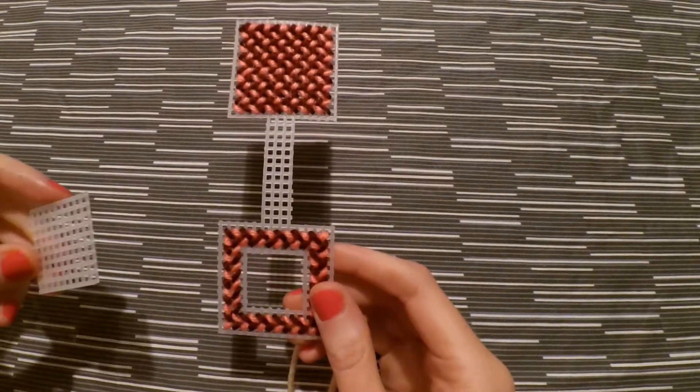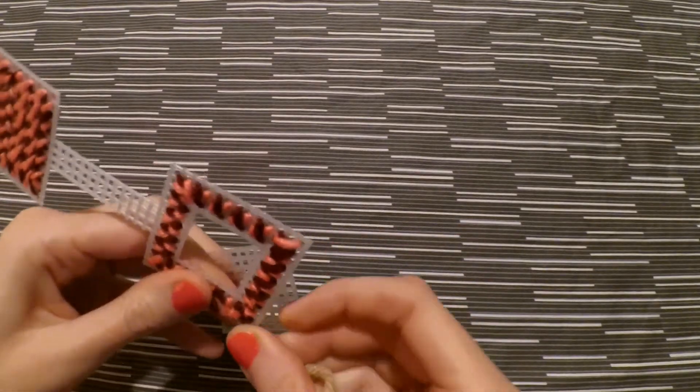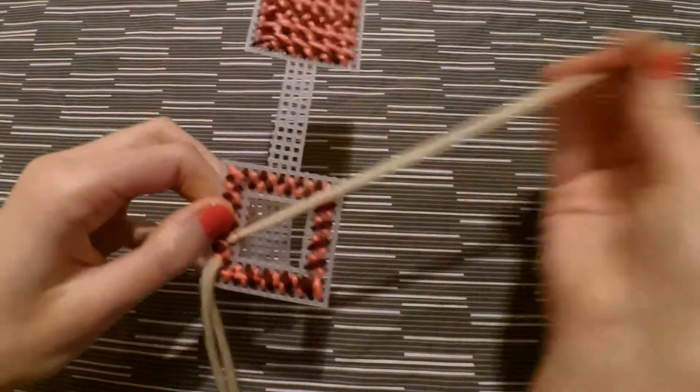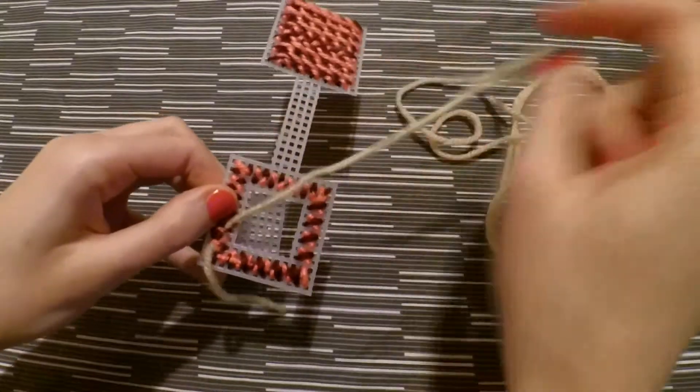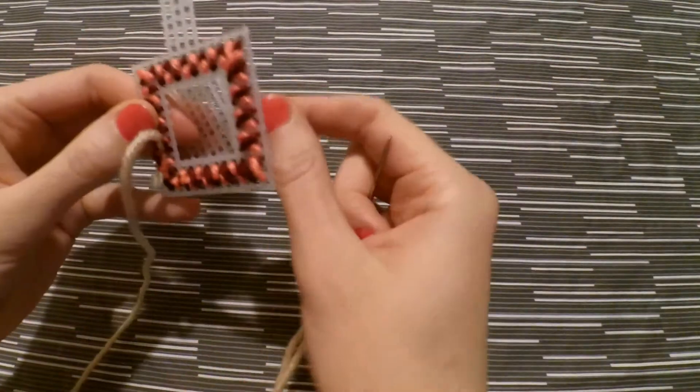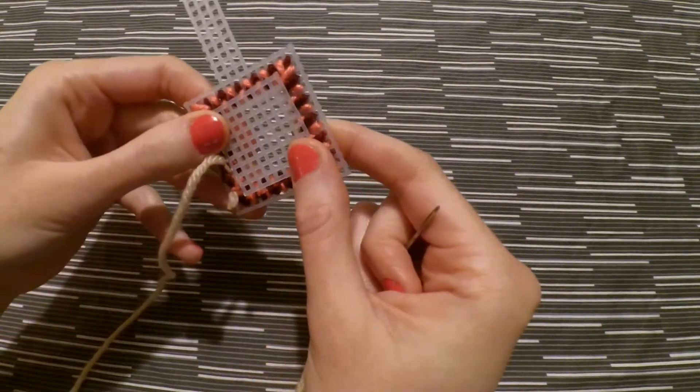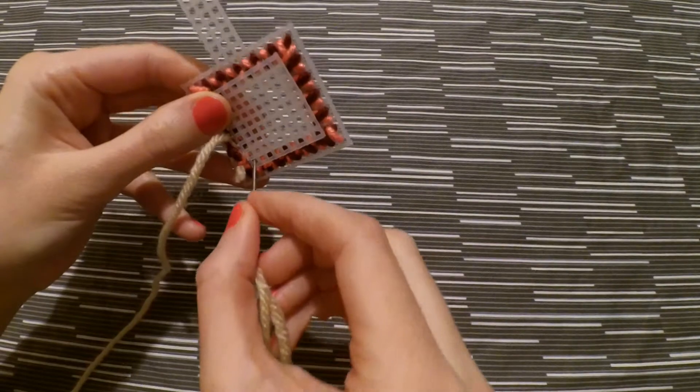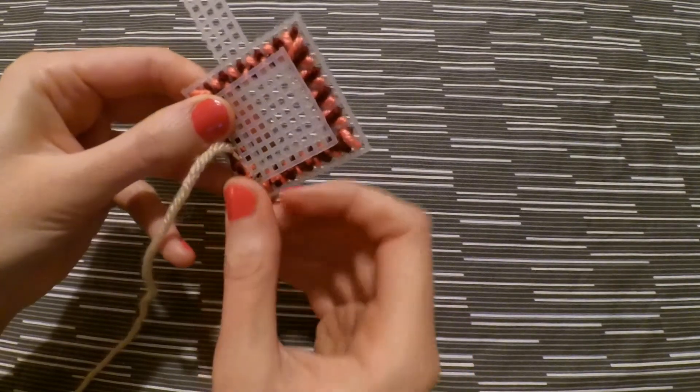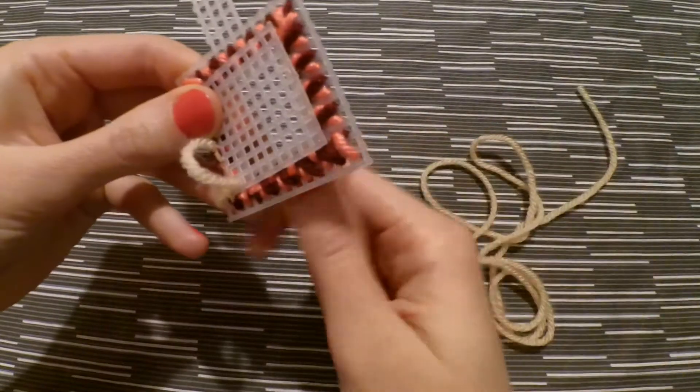So now we're going to take our second piece and we're just going to stitch it to the inside border. So you're going to use your third color and start by tacking it down just by tucking it under a few stitches at the back. And now you're just going to stitch it together all the way around except for the top. You want to leave the top open so that we can slide in our picture.